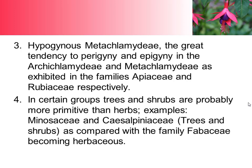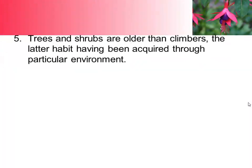In certain groups, trees and shrubs are probably more primitive than herbs. Examples include Mimosaceae and Caesalpiniaceae as trees and shrubs, compared with the family Fabaceae which became herbaceous — the advanced one. Trees and shrubs are older than climbers, the latter habit having been acquired through a particular environment.